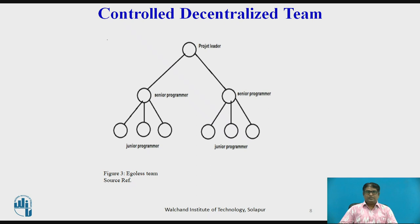The controlled decentralized team mixes ideas from both the ego-less organization and the chief programmer team organization. This team structure consists of a project leader who has a group of senior programmers, and each senior programmer again has a group of junior programmers under their leadership. The project leader communicates with the senior programmers, who communicate with the junior programmers. Senior programmers are not allowed to communicate among themselves for decision making, but junior programmers can communicate within their group, which in turn communicates with their senior programmer.